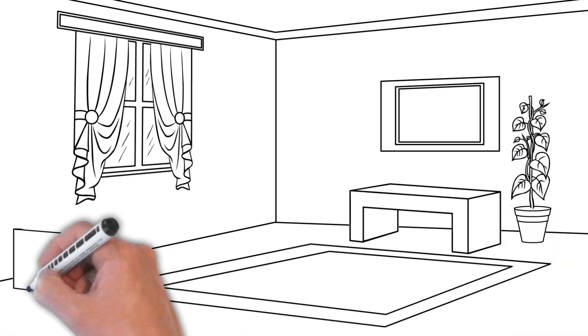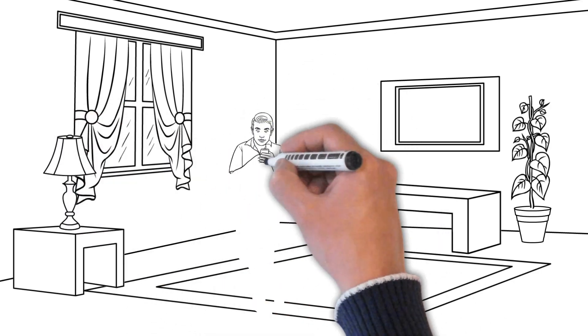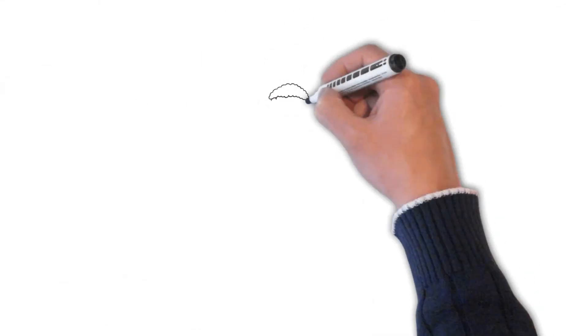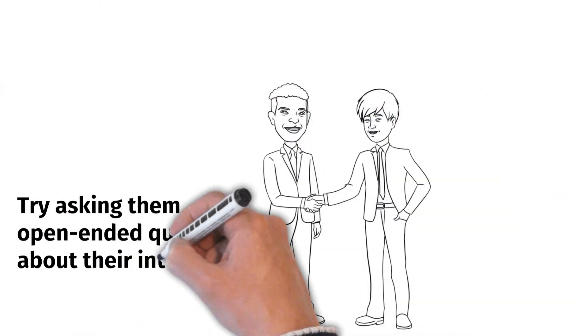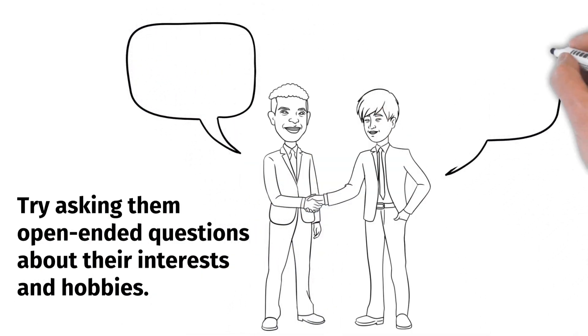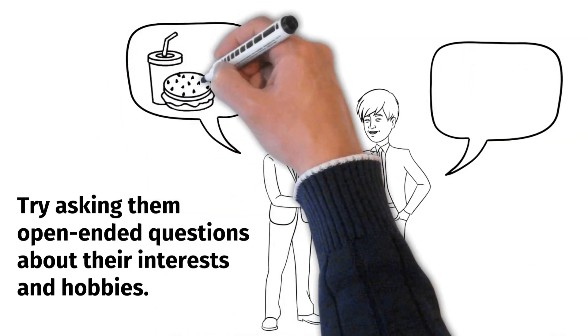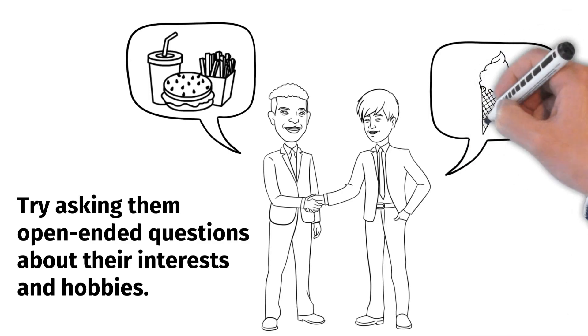Instead of monopolizing the conversation, we should encourage others to talk and listen attentively to what they have to say. If you are trying to make friends with a new colleague, try asking them open-ended questions about their interests and hobbies. And be sure to pay attention and stay engaged in the conversation. If you appear uninterested or distracted, you are better off not encouraging them to talk at all.